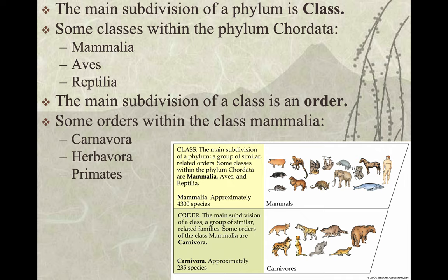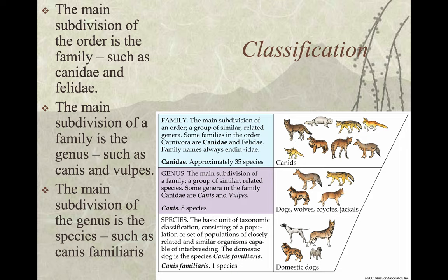Herbivora eat vegetable matter almost exclusively, and Carnivora eat meat almost exclusively. The main subdivision of an order is the family, such as Canidae and Felidae. The main subdivision of a family is the genus, such as Canis and Vulpes. Canidae is dogs and Felidae is cats. The main subdivision of the genus is the species, such as Canis familiaris — your domesticated dogs.